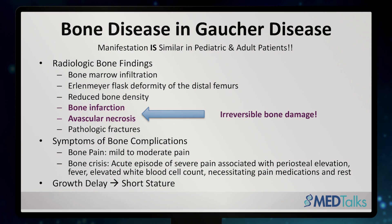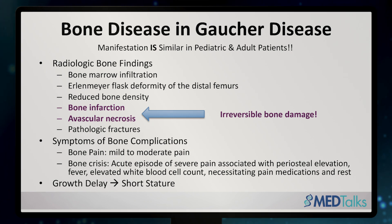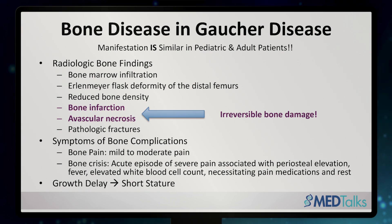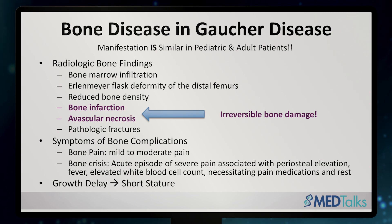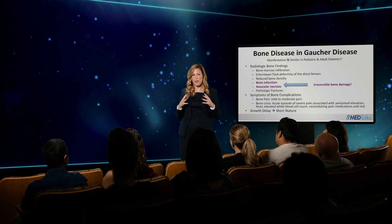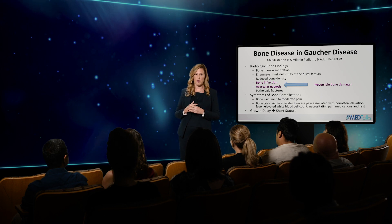These manifest as episodes of bone pain and bone crises. Bone pain is typically a mild to moderate pain deep inside the bones that is transient and goes away. The more severe crises may prompt the patient to seek help in the emergency room. It might be associated with a fever, an elevation in white count, and changes on x-ray, leading to irreversible bone damage. As you can see, Gaucher cells manifest and penetrate throughout the body.